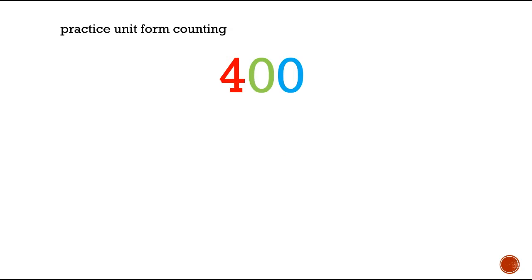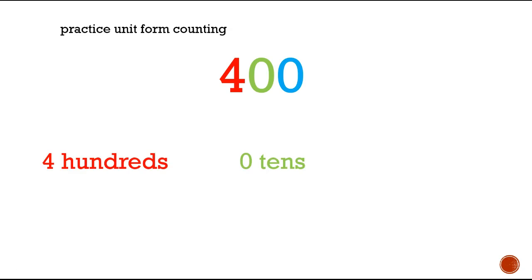Don't let this one trick you. How are we going to write 400 out in unit form? We're going to write it as 4 hundreds, 0 tens, and 0 ones.